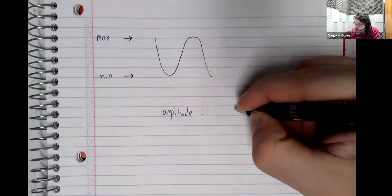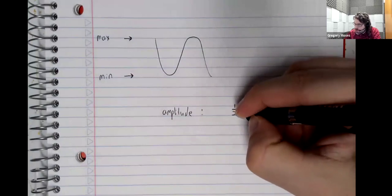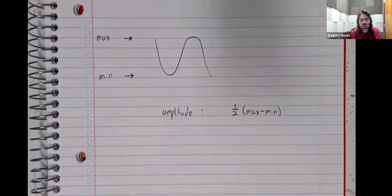Amplitude is almost that, but not quite. Amplitude is half of the distance between the maximum and the minimum.